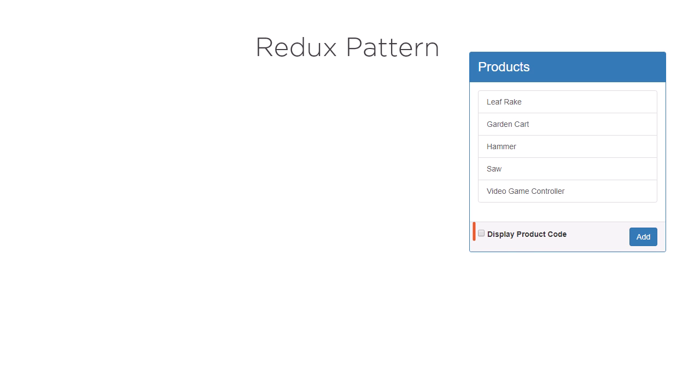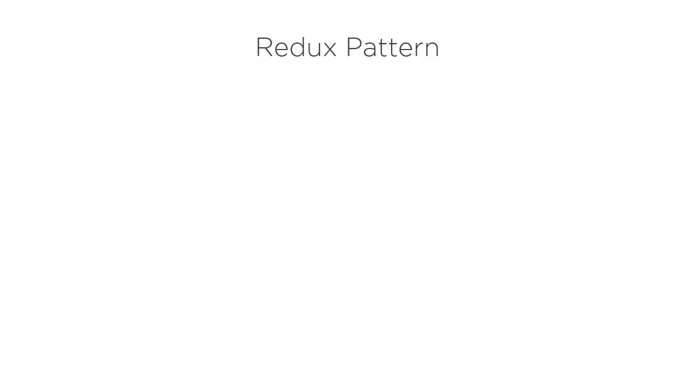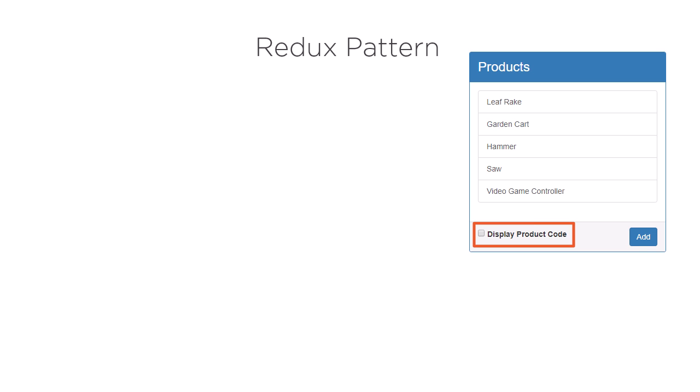In this example, we have a checkbox at the bottom of our view that the user can select to include the product code in the display. We could define a local property in the component to track this flag. But then if the user navigates away and later navigates back, we lose their selection.